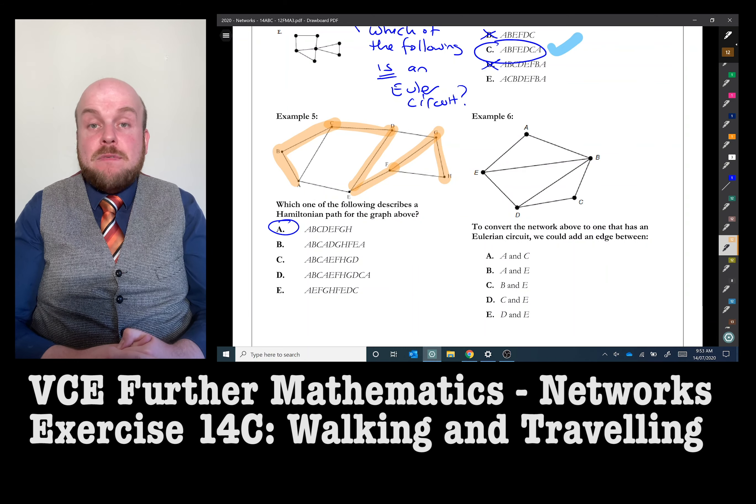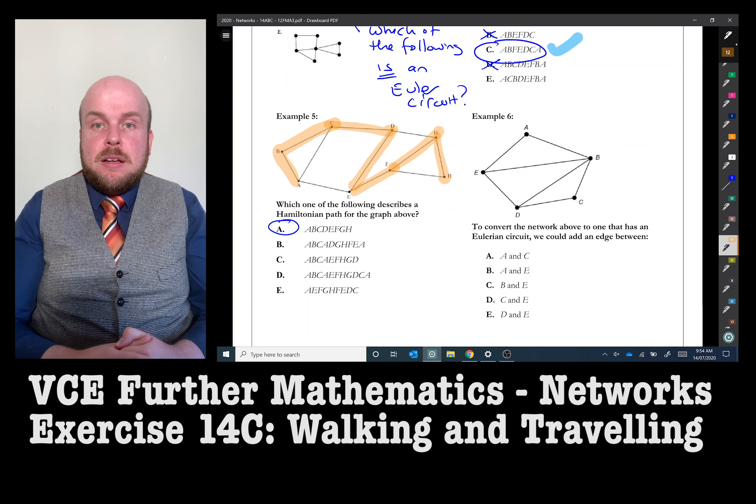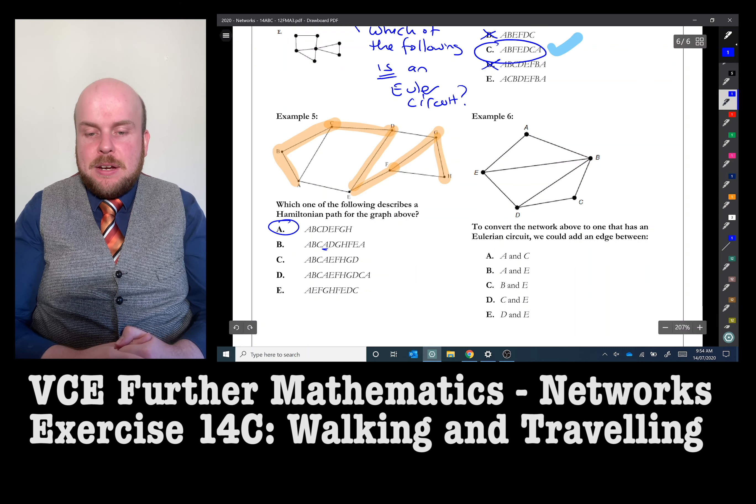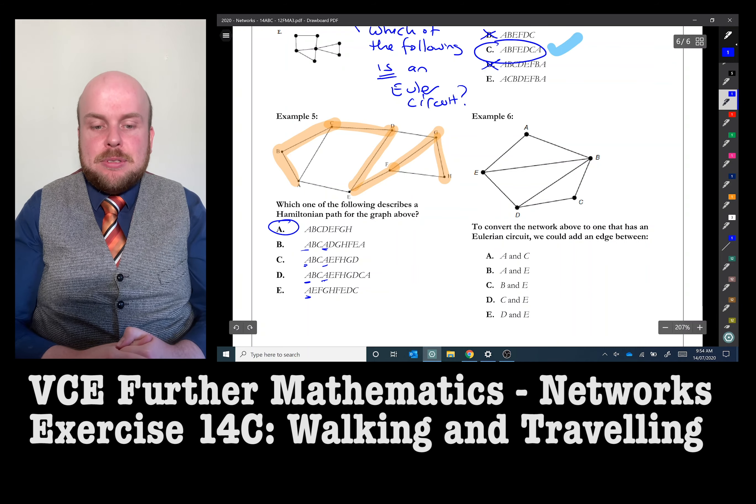The other examples all have repeats, or they have repeated vertices throughout, which we cannot have for any Hamiltonian path.